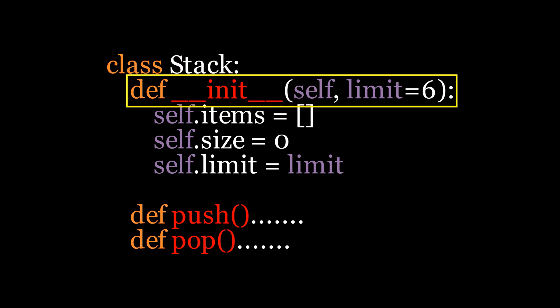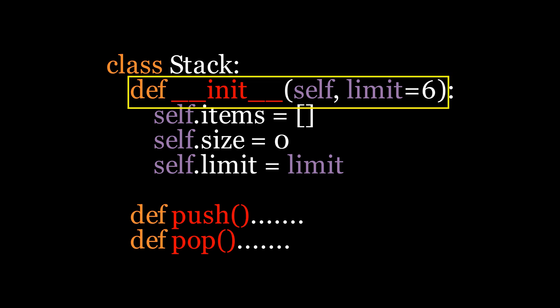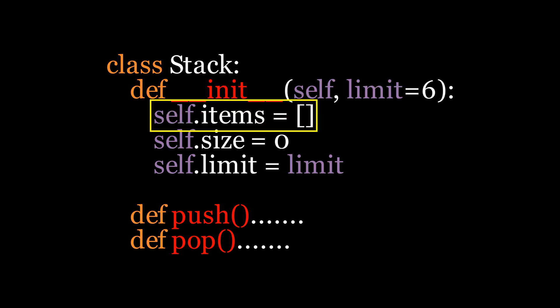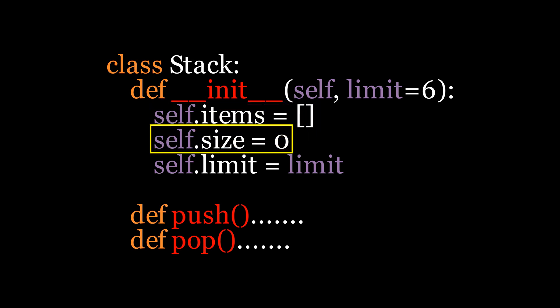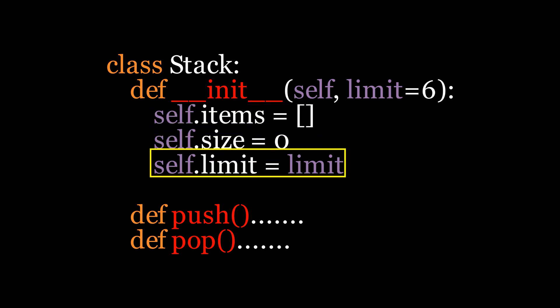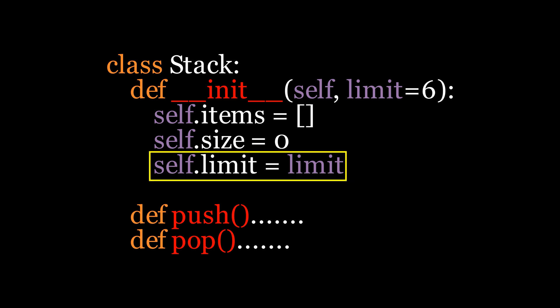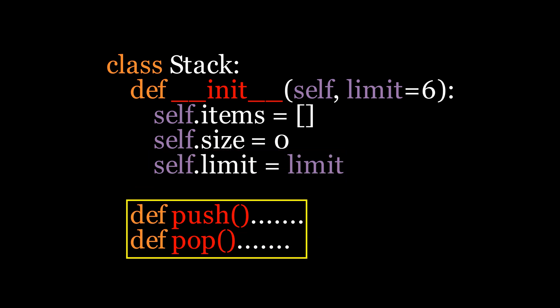We'll start by defining a class called Stack. In the constructor, we'll set a default limit of 6 for the stack and initialize three members: Items, to store the stack elements; Size, to track the current number of elements; and Limit, to set the maximum capacity. After that, we'll define the operations, such as push to add elements and pop to remove elements.